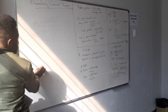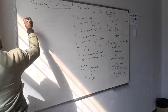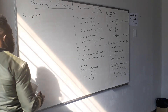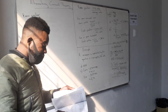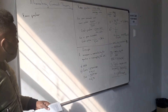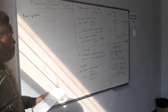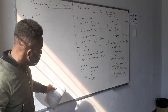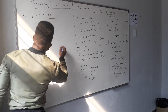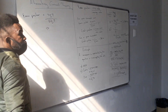On part G, they want the form factor. The formula for form factor is RMS divided by average. Our RMS value is 70.7 and our average was 63.7. Dividing gives approximately 1.11.